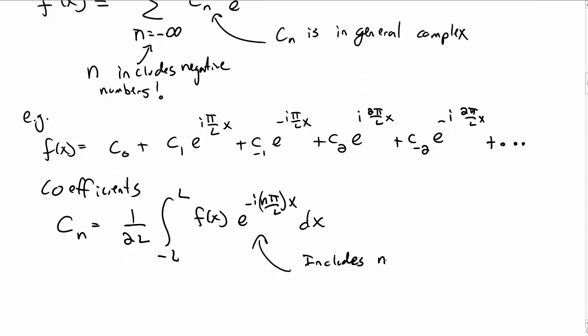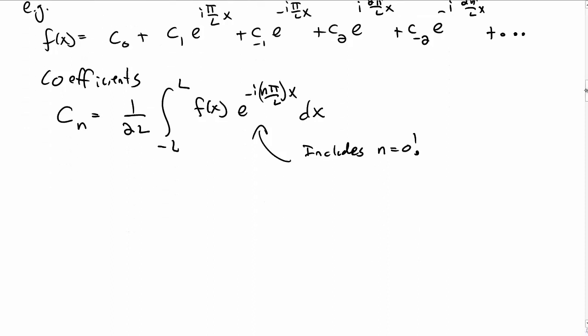You can calculate the coefficients by a Fourier series type of integral from negative l to l, f of x e to the minus i n pi over l, x, dx. So, that looks like our usual type of integral. One thing it's worth noting is that this expression for the coefficients includes n equal to 0.